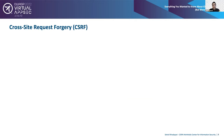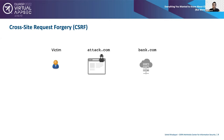To better understand this problem, let's look at an example of a very old but critical vulnerability: cross-site request forgery, or CSRF, a confused deputy security problem. In this attack, there are three main actors: a victim, an attacker controlling a malicious web page, and a target website, say bank.com. Attack.com, where the attacker is located, is a different site or web origin than bank.com, and that's why the term 'cross-site' exists in the attack title.